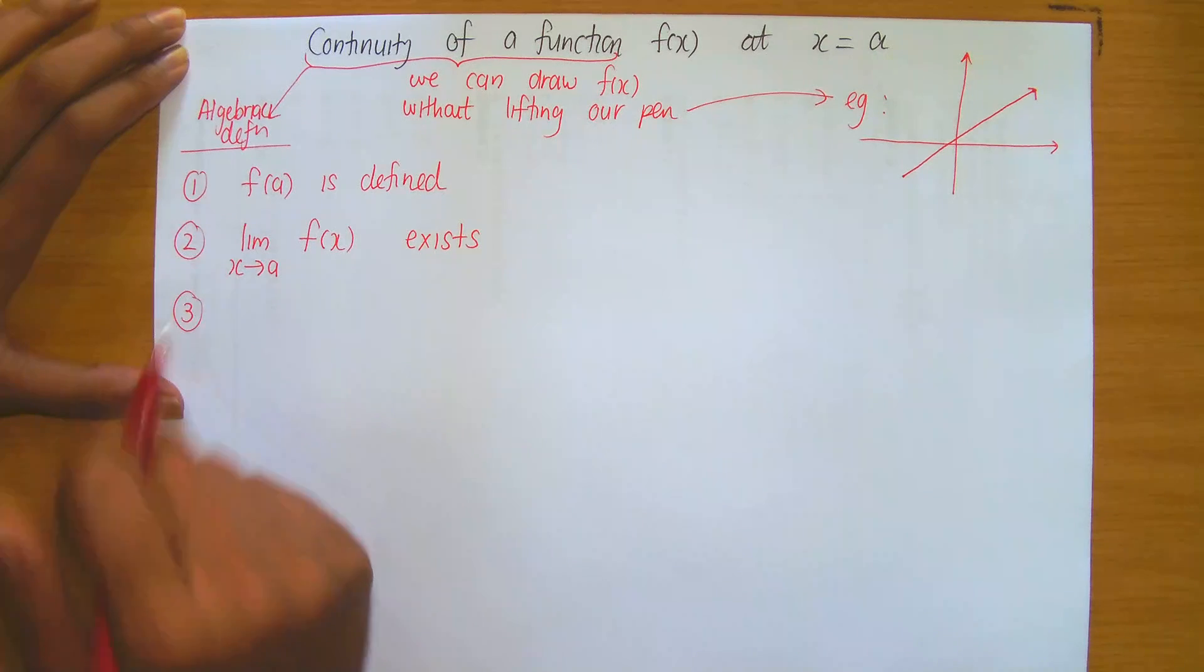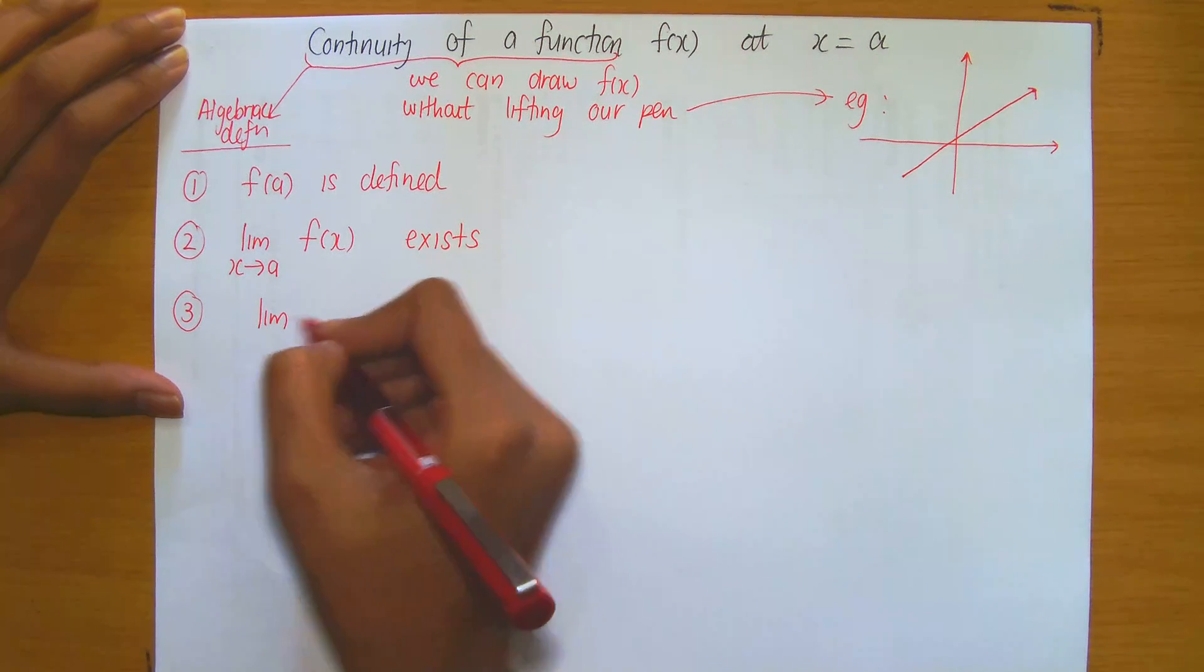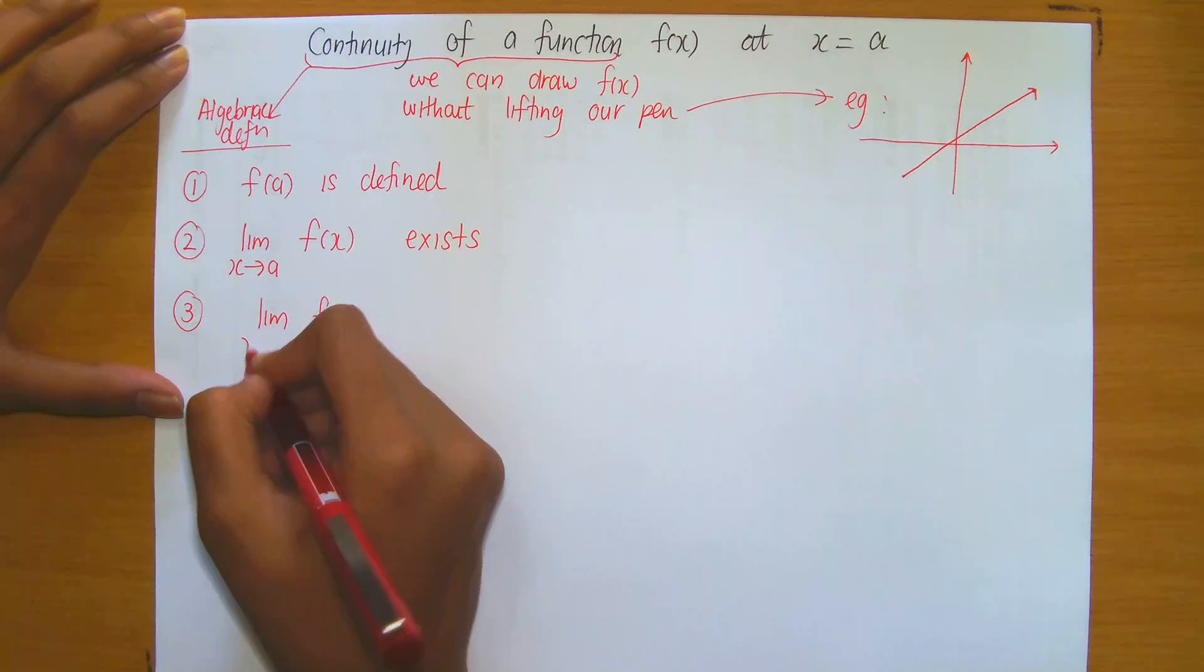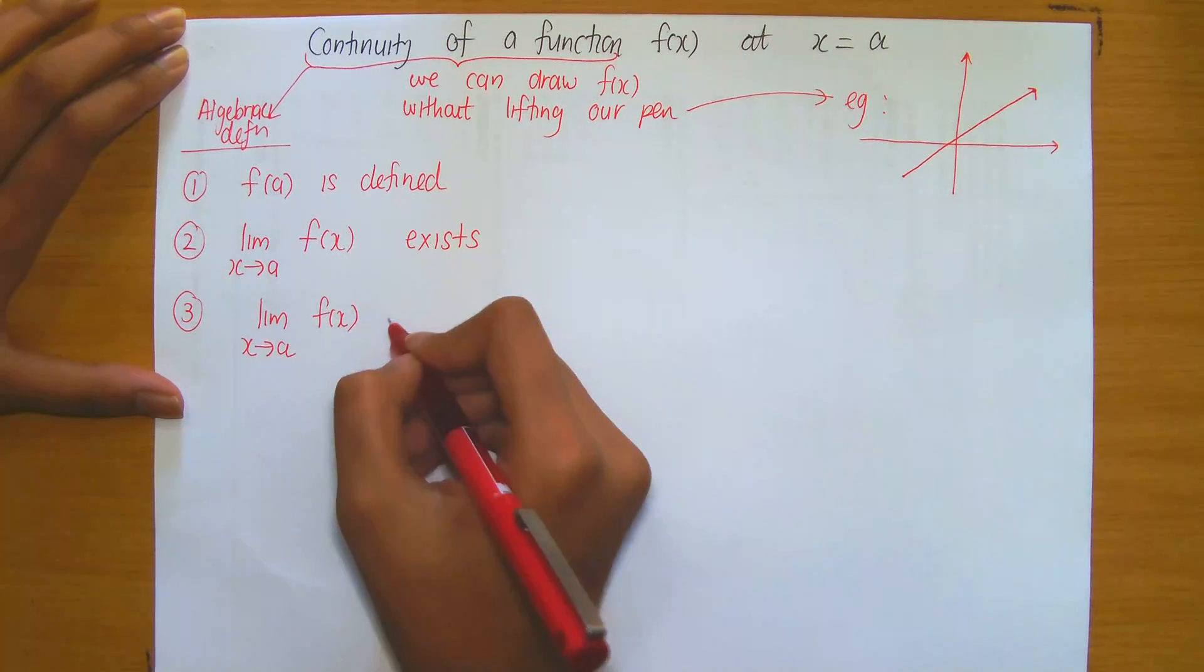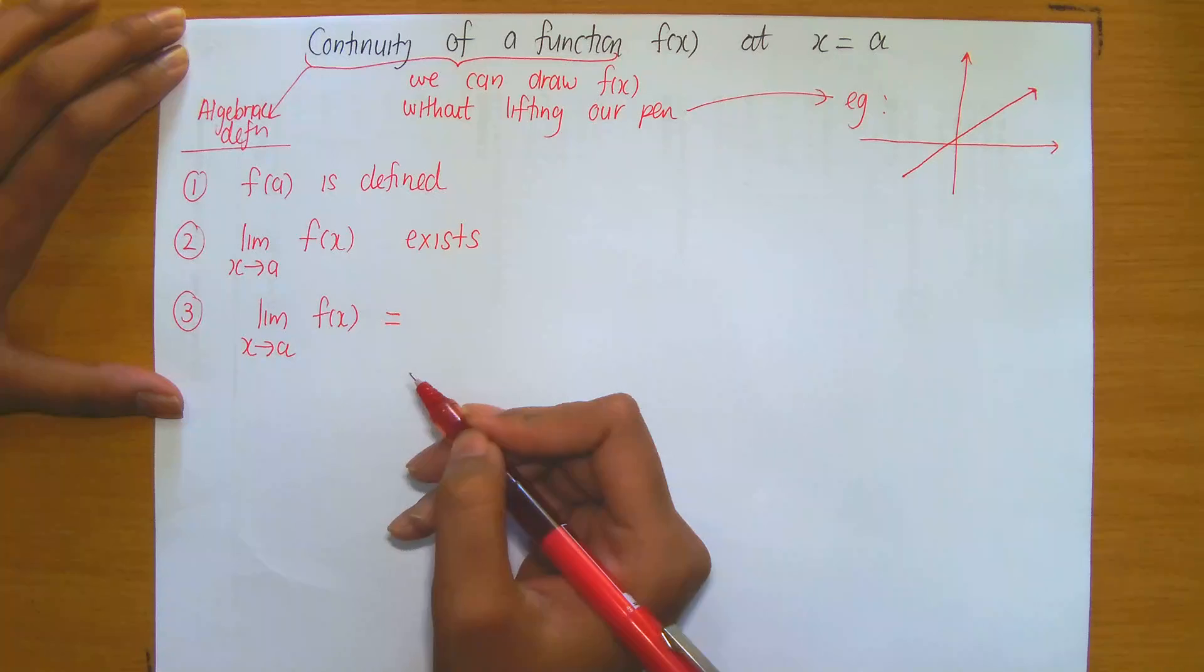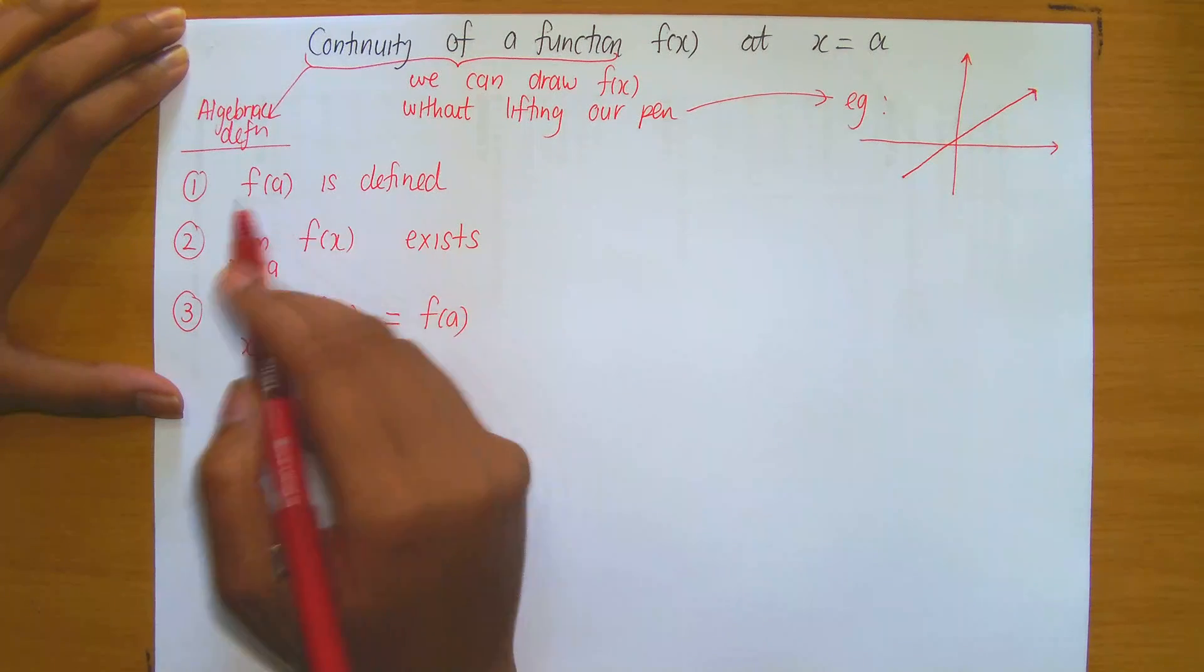And the third is actually now a combination of number one and two. The third says that the limit of f(x) as x approaches a, since we know it does exist, it must equal to something. That particular value that it should equal to is the value of f at a.